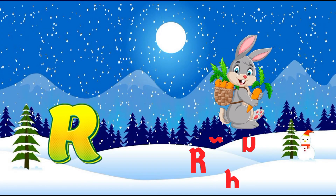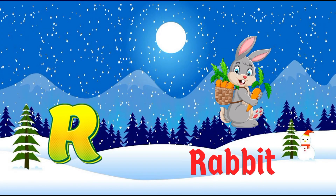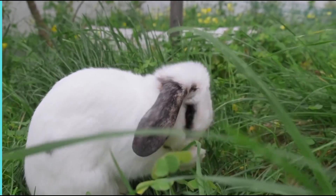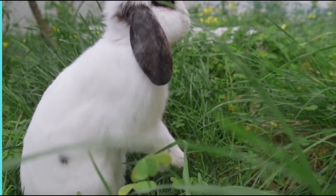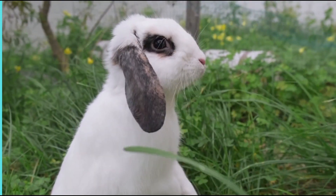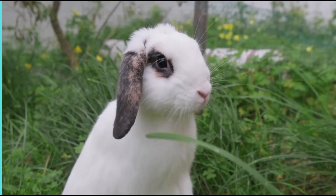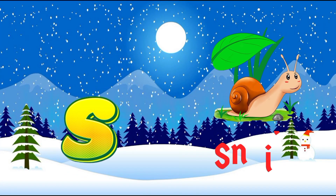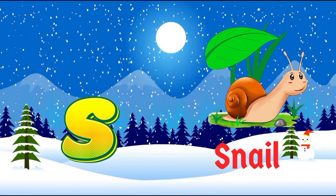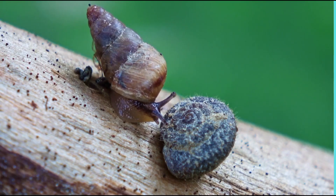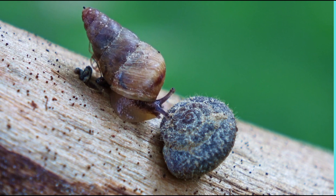R is for Rabbit. A, B, C, D, E, F, G. Q, R, S, T, U, V, W, X, Y, Z. S is for Snail. Now I know my ABCs. Next time won't you sing with me. Snail.